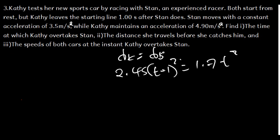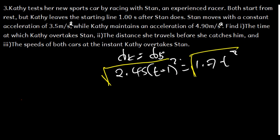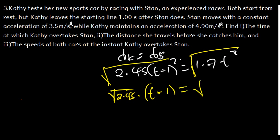Rather than expanding into a full quadratic, we can use a shortcut by taking the square root of both sides. The square root of 2.45(T − 1)² equals √2.45 × (T − 1), and the square root of 1.75T² equals √1.75 × T. The squared terms are removed by the square root.